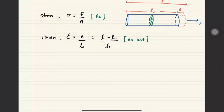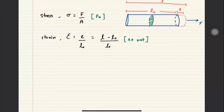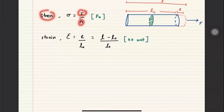Both stress and strain are scalar quantities — there is no direction, so you don't have to worry about vectors. You should be able to differentiate: stress relates to force per unit area, strain relates to elongation. In the formula sheet they only give symbols, so if you get confused about which is stress and which is strain, you will mix everything up. Stress is F over A; strain is elongation over the initial length.